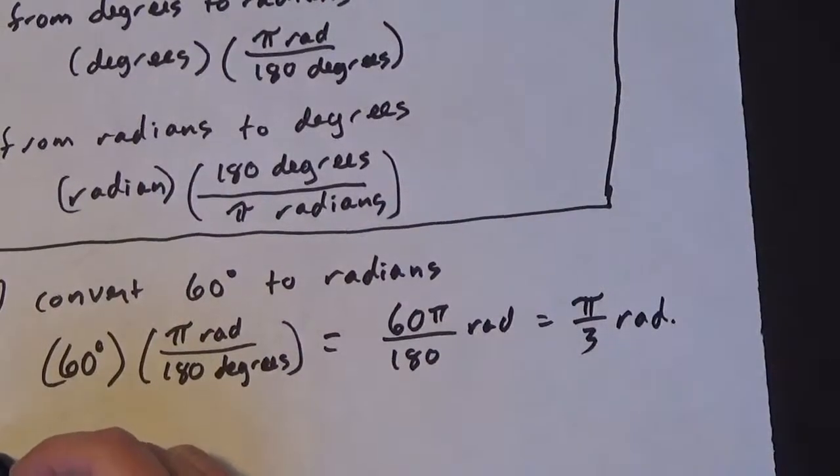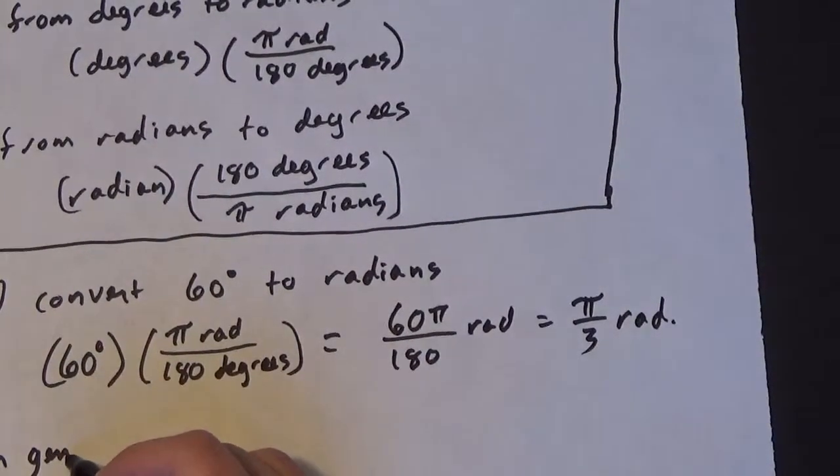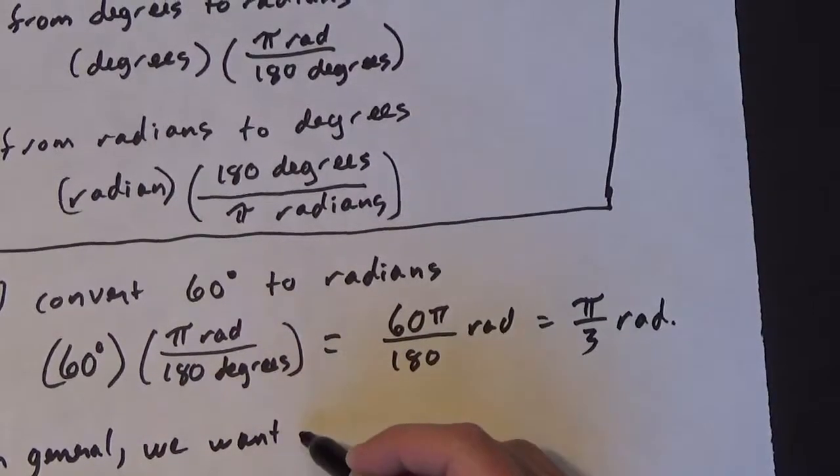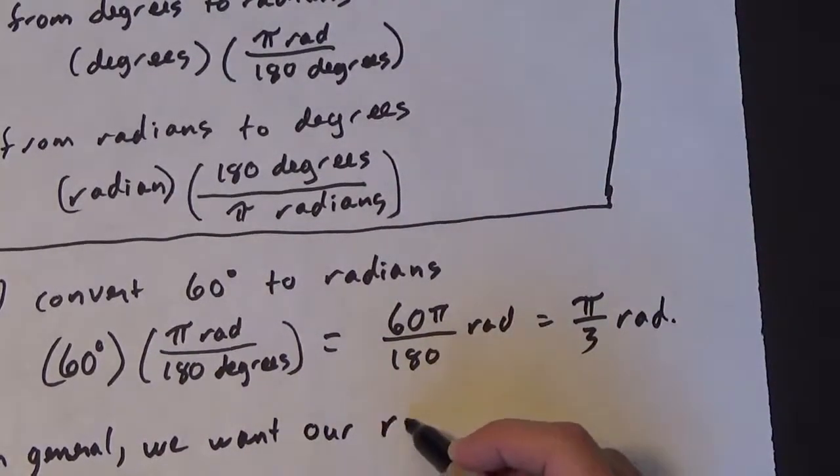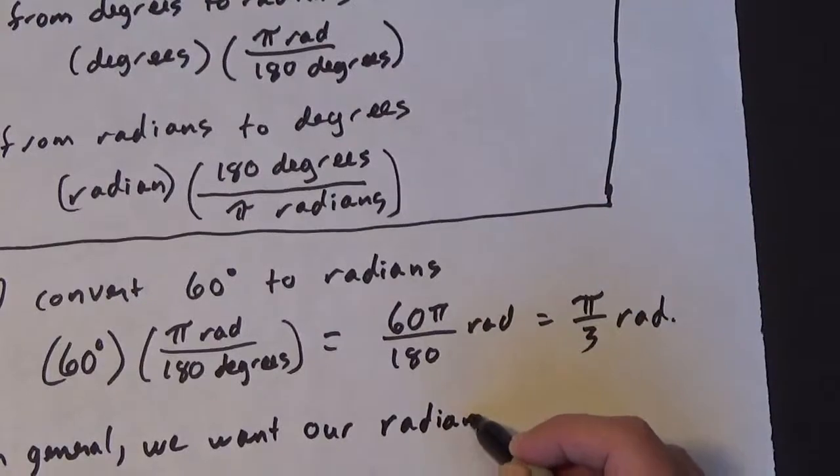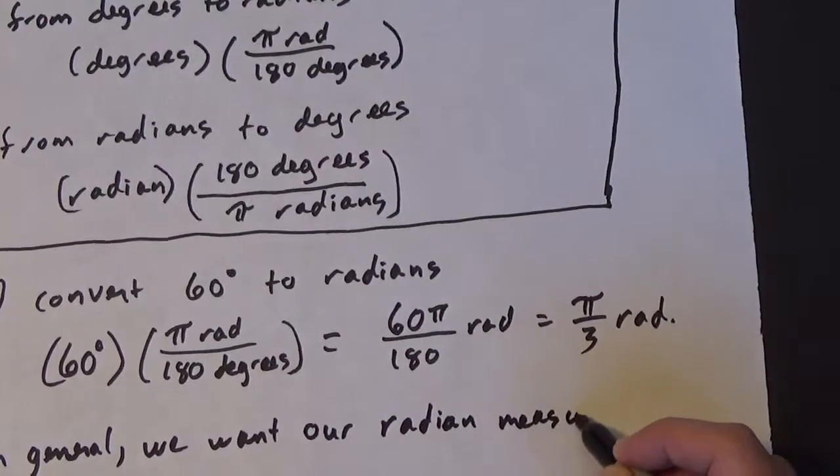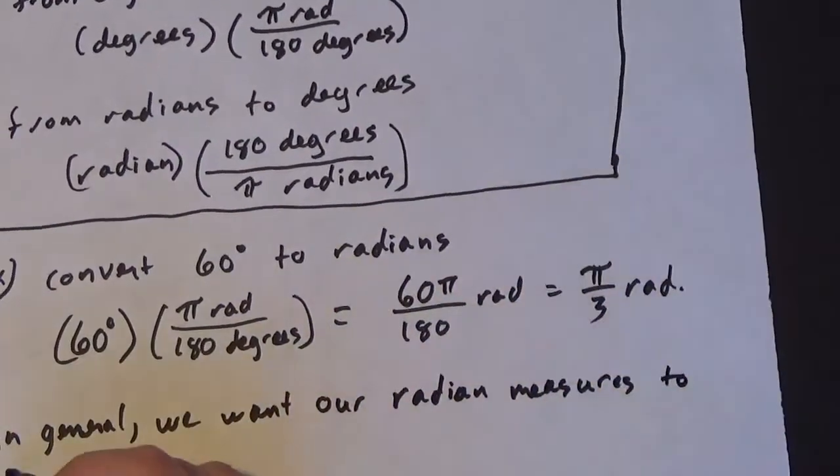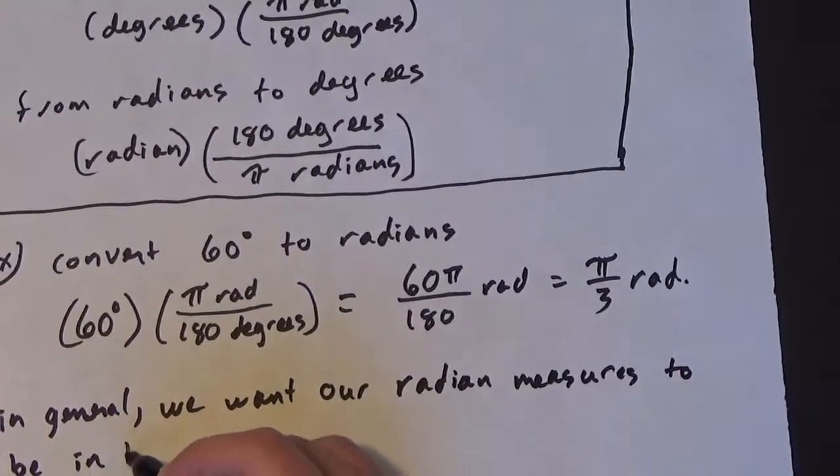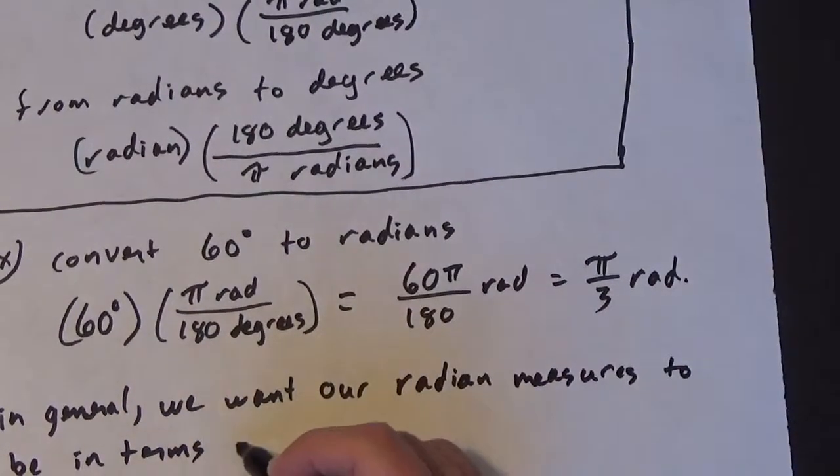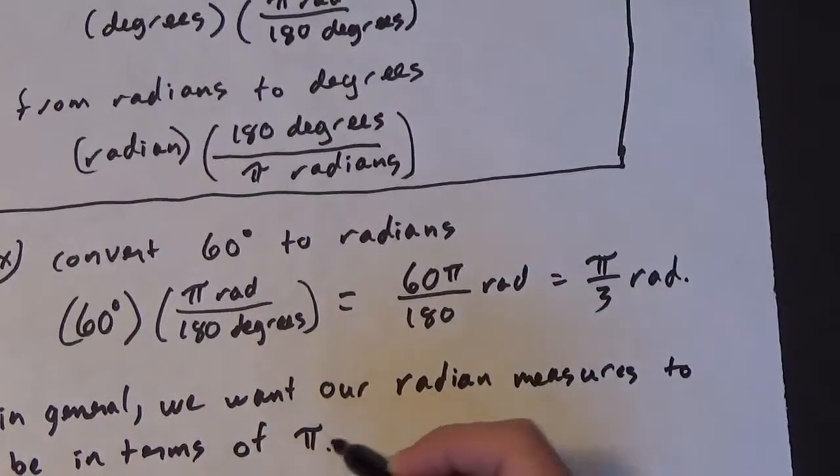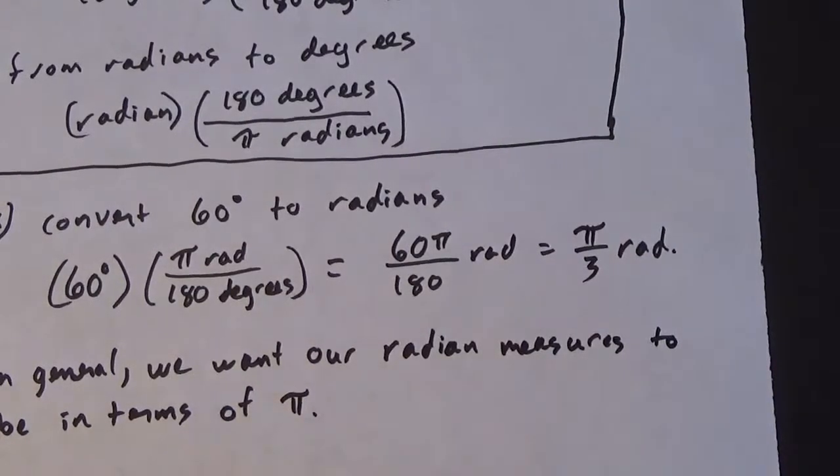So in general, we want our radian measures to be in terms of pi. Of course, that's not always going to happen. There are times where you just can't put it in terms of pi, just the way it's set up.